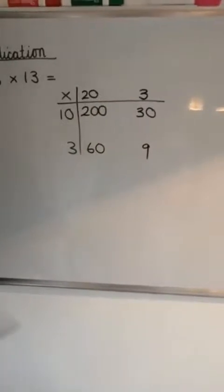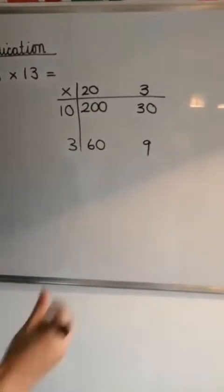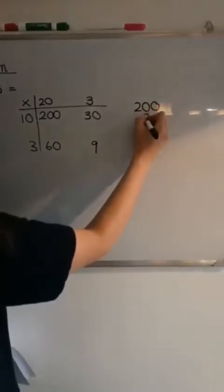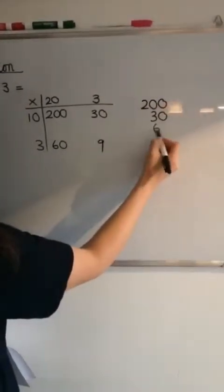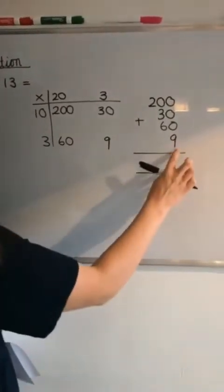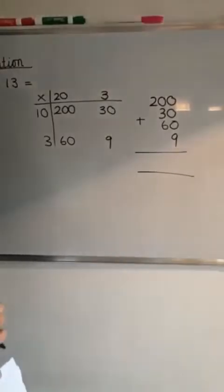And then are we finished? No, we say in class we need to add them up. So we've got 200, add 30, add 60, and add 9. Check your place value columns, make sure that all those numbers are in the right place.